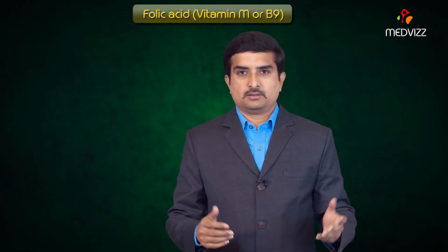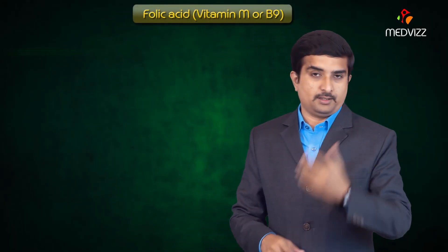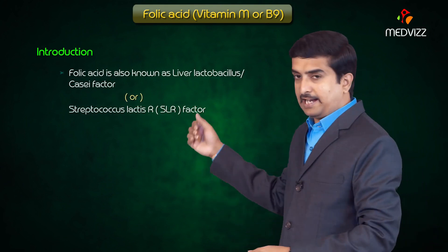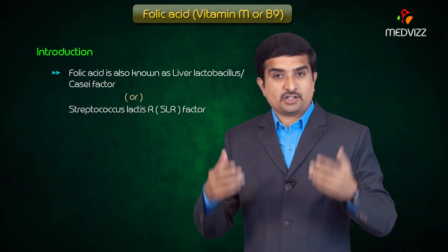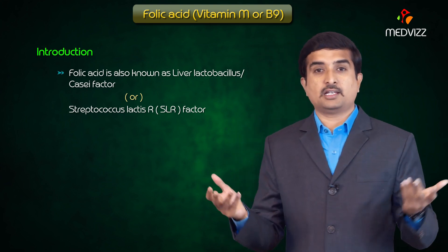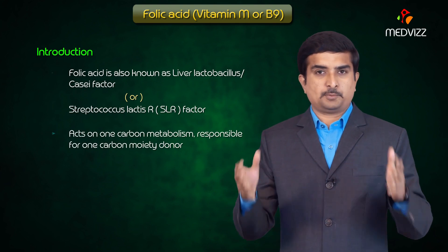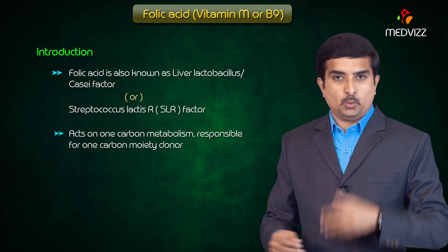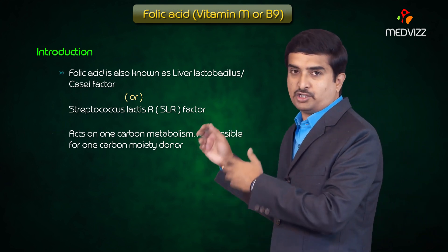Folic acid, also known as Vitamin M or B9, is also called liver lactobacillus KCI factor, streptococcus lactis R factor (SLR factor). It acts especially on one-carbon metabolism, where it is responsible for one-carbon moiety donation.